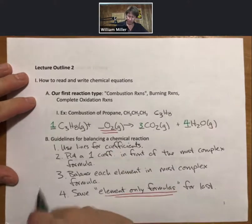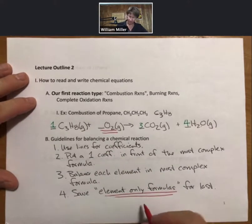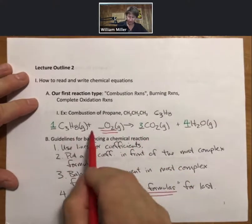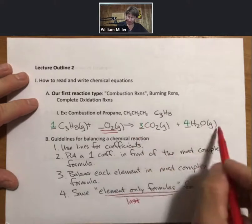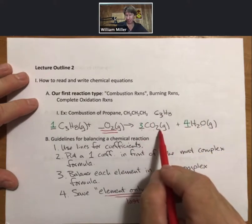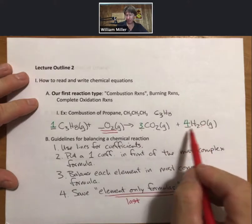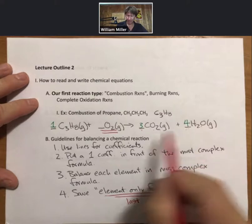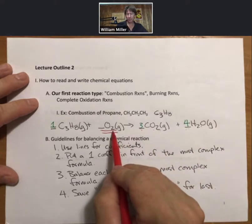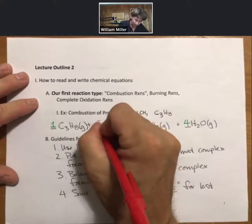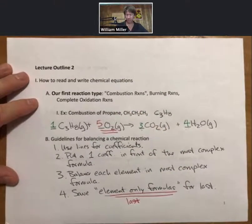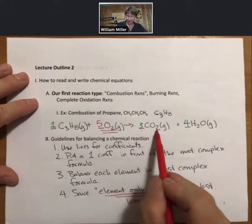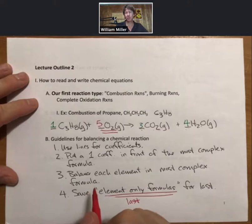Now there's only one coefficient left. That's going to be my element only formula. I'm going to do that last. And now I can count up my oxygens on my product side. Three times two is six. Plus four times one is four. So that's a total of ten. Oxygens come two at a time. Therefore, I need five as my coefficient. And what I always like to do is then revisit this. Five times two is ten. Six plus four is ten. My oxygens are balanced as well.